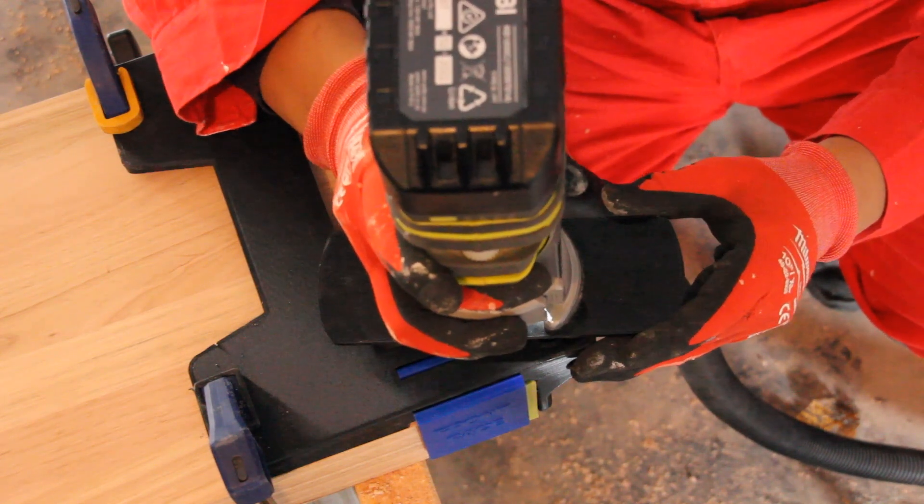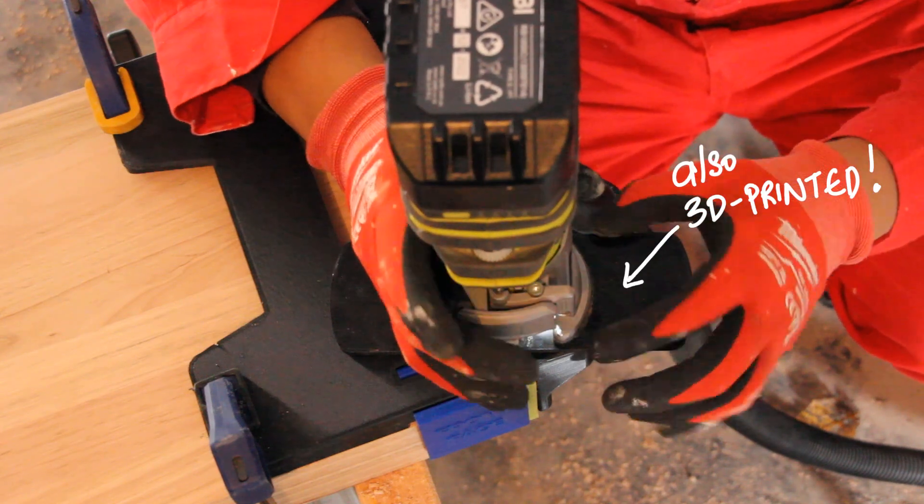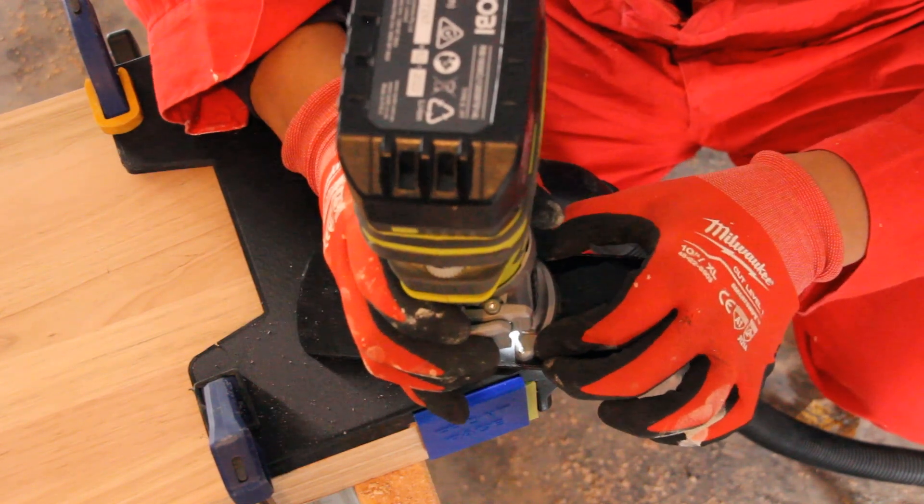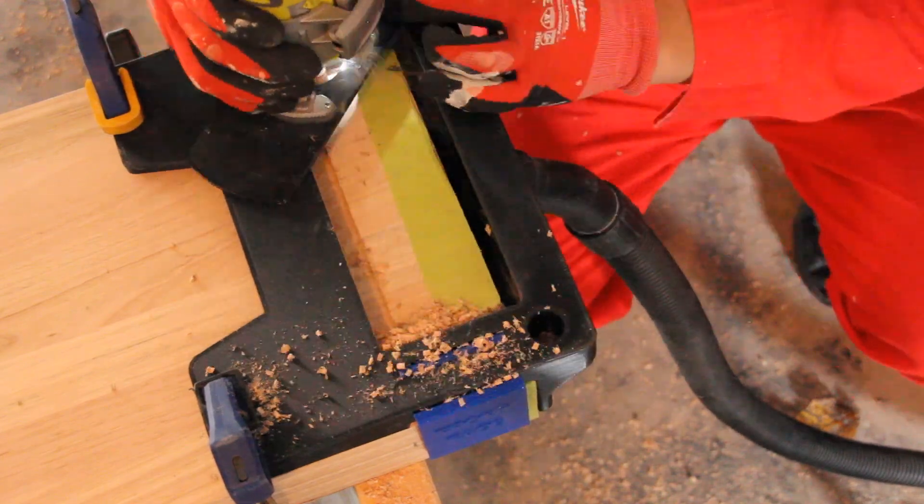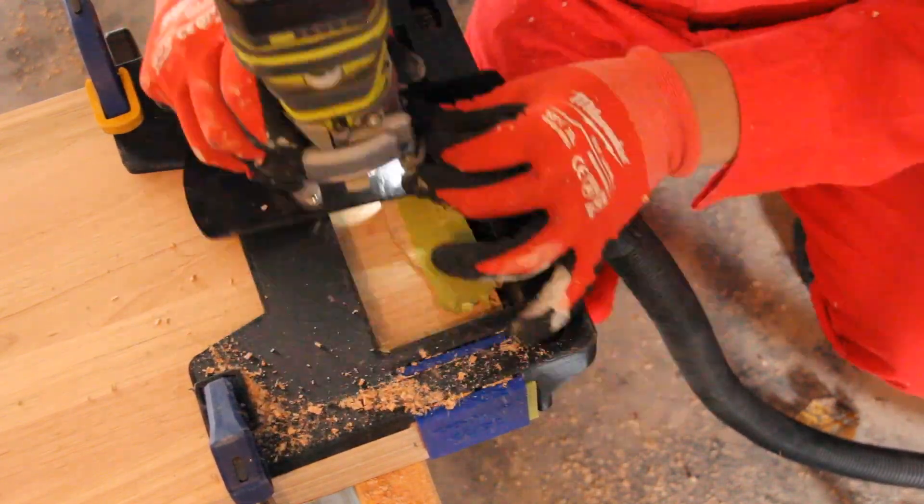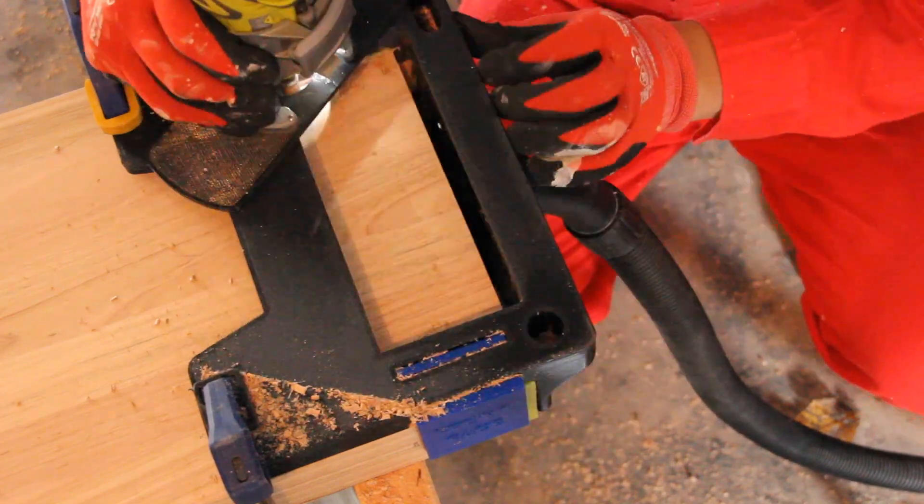The white base of my hand router is also 3D printed. Because of the depth of what I wanted to route out, I had to do it in two or three passes.